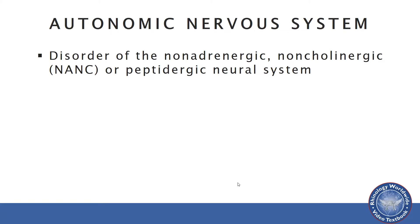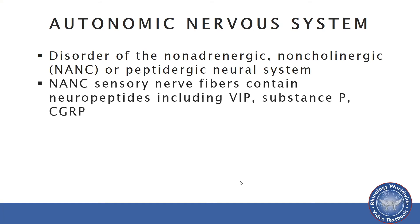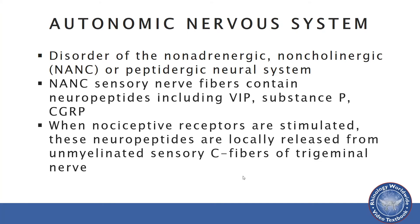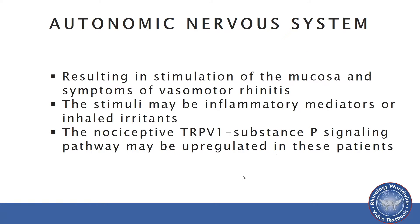It is a disorder of the non-adrenergic, non-cholinergic, or peptidergic neural system. The sensory nerve fibers involved contain neuropeptides including vasoactive intestinal peptide, substance P, and calcitonin gene-related peptide. When the nociceptive receptors are stimulated, these neuropeptides are locally released from unmyelinated sensory C fibers of the trigeminal nerve, resulting in stimulation of the mucosa and symptoms associated with vasomotor rhinitis.